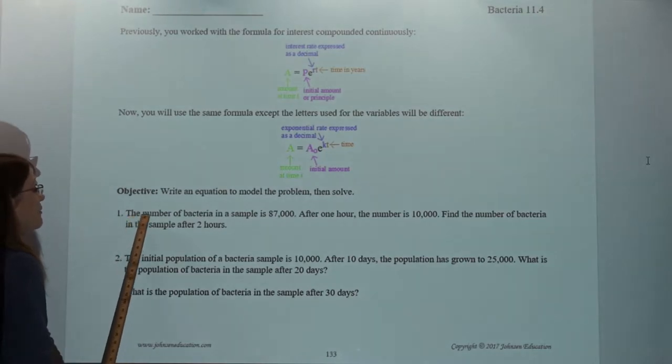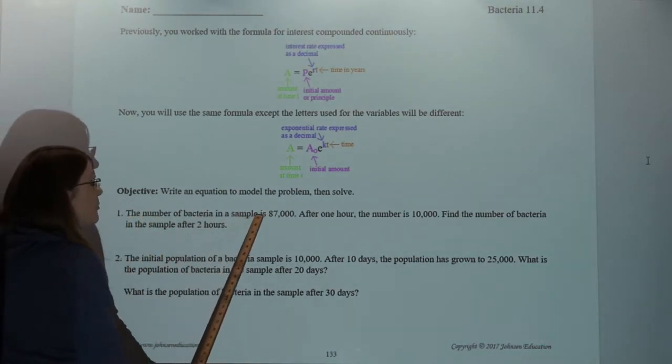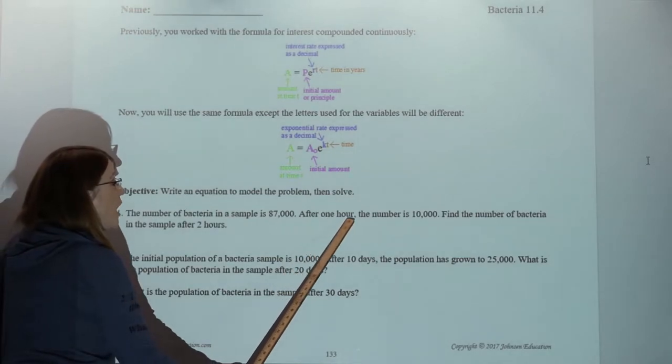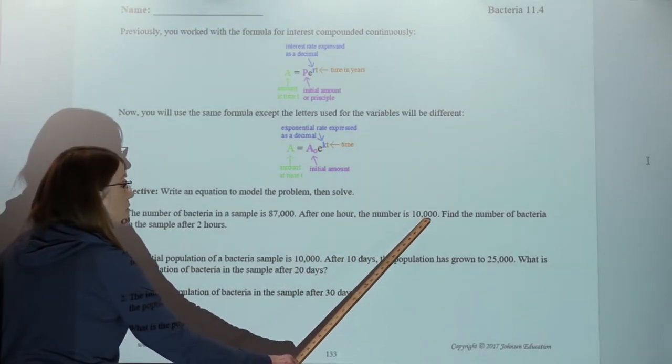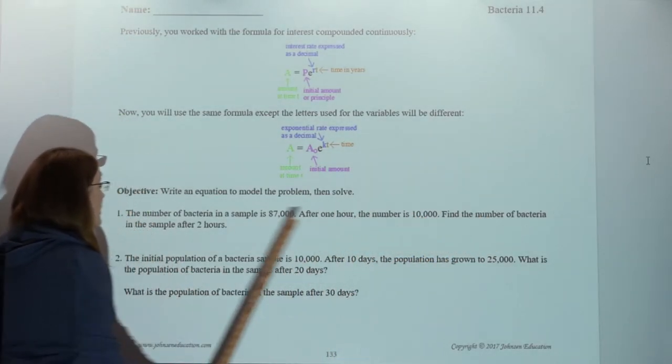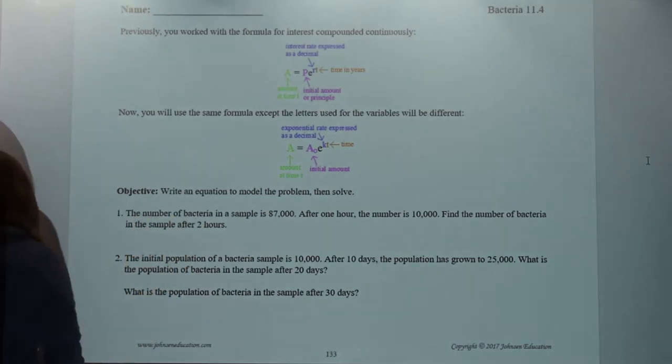The first one, the number of bacteria in a sample is 87,000. After one hour, the number is 10,000. Find the number of bacteria in the sample after two hours.